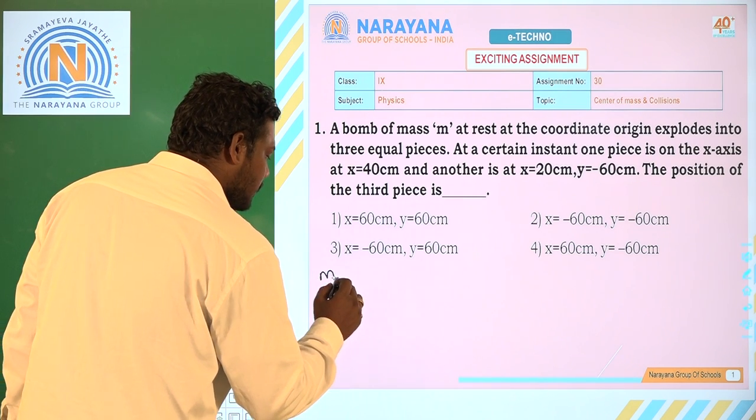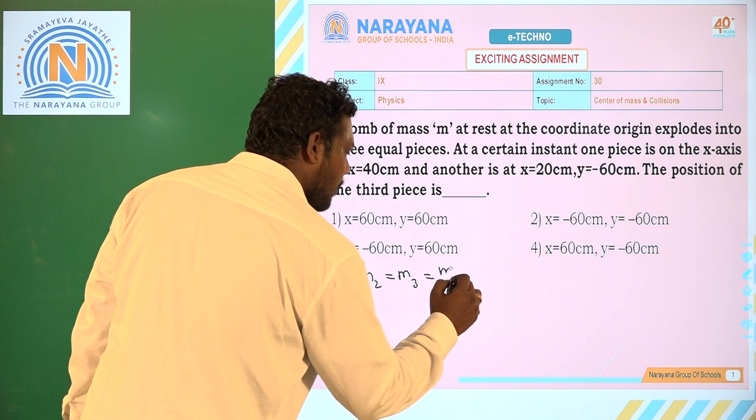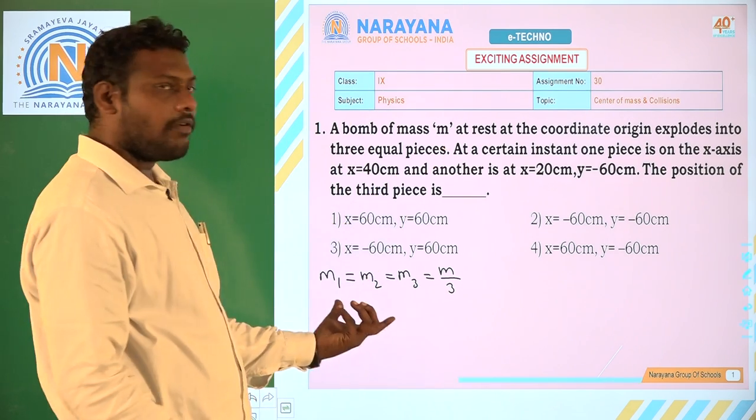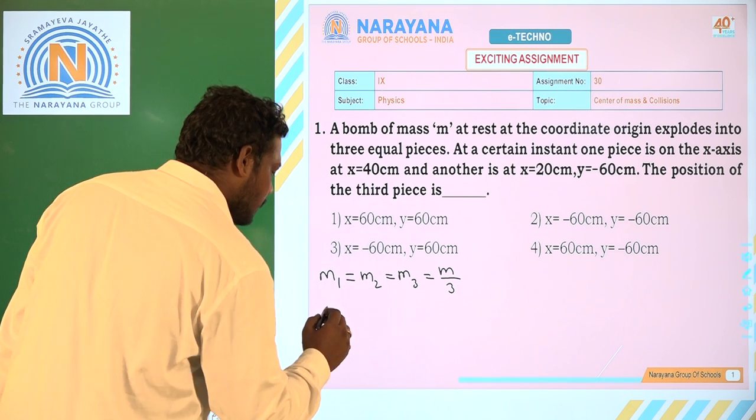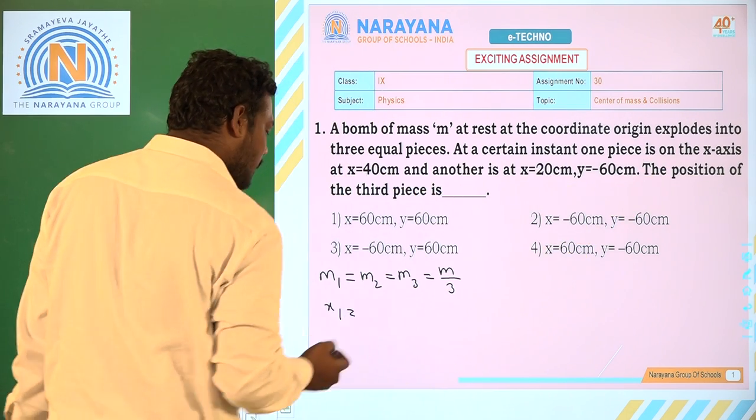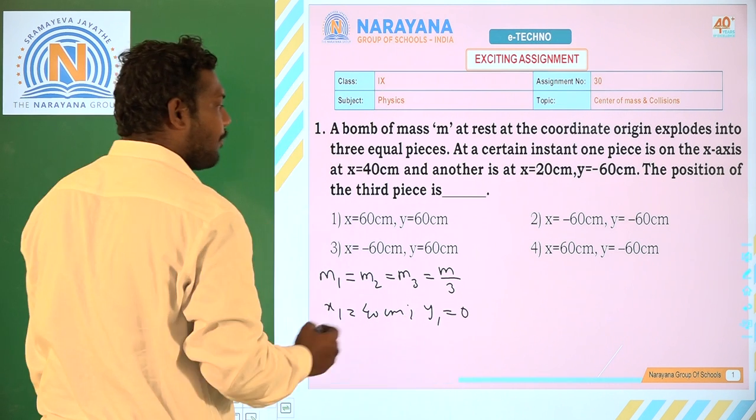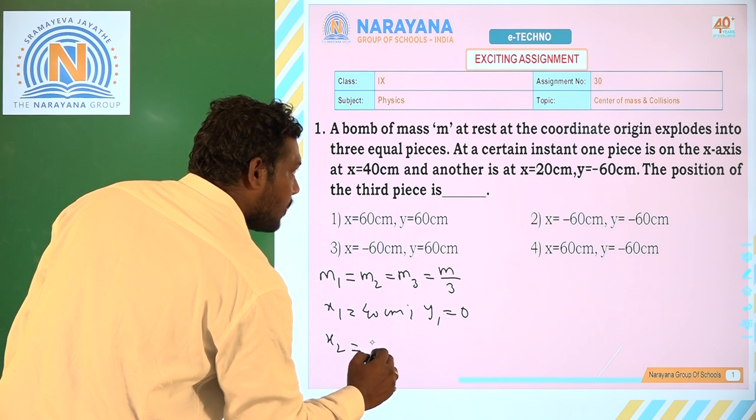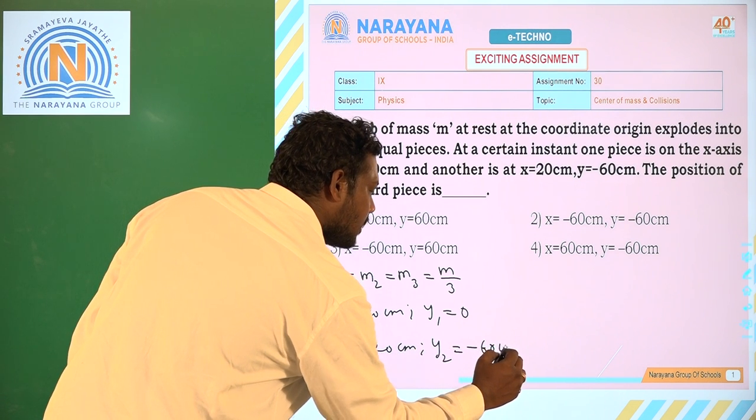So 3 equal parts, that is M1 = M2 = M3 = M/3. Because the total mass is M, so 3 equal parts M/3. And x1=40 centimeters, one piece is on the x-axis itself only, so x1=40 centimeters and y1=0.